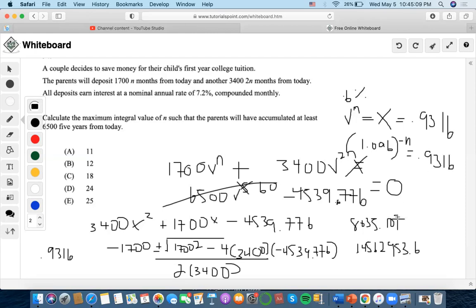We can do this using logarithms. I'll do negative N times LN 1.006 equals LN 0.9316. Then I could do LN 0.9316, which is negative 0.070, divided by LN 1.006.